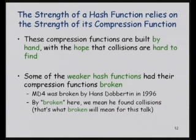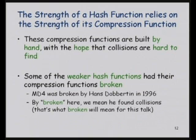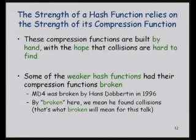The strength of the hash function is based on the strength of the compression function, so you have to build good compression functions. If you build them by hand and have good confidence that they're collision resistant, you automatically get that the iterated hash will be collision resistant as well. All of the hash function attacks that have occurred over the last several decades have always focused on that compression function — because it's also true that if you break the compression function, you'll break the iterated hash. So while it's a good place to invest your ingenuity when designing, it's also a good place to invest your ingenuity when attacking.